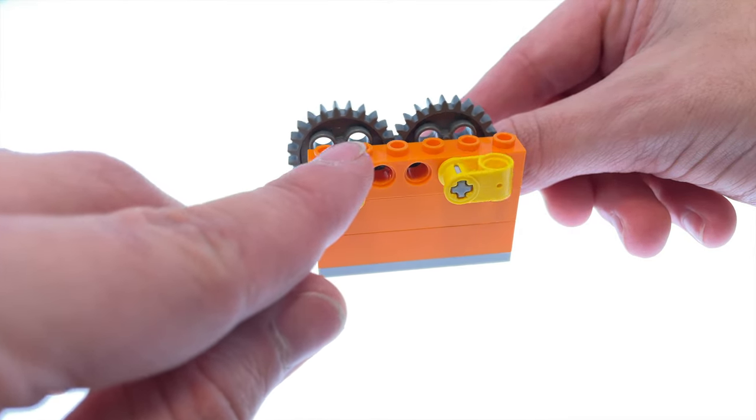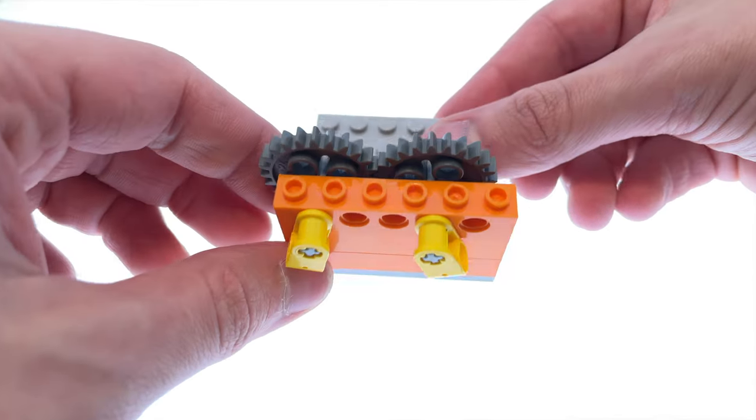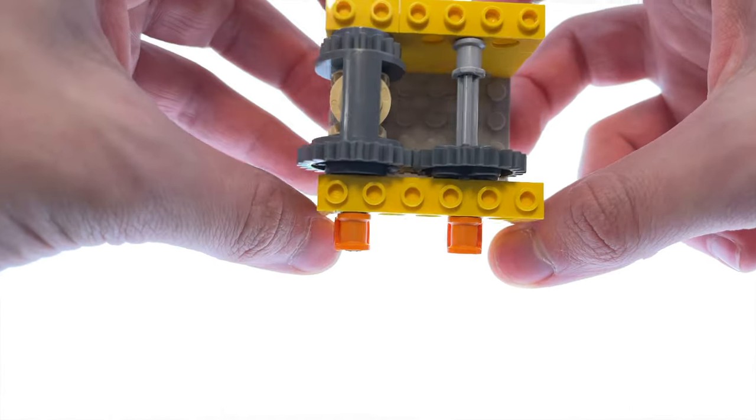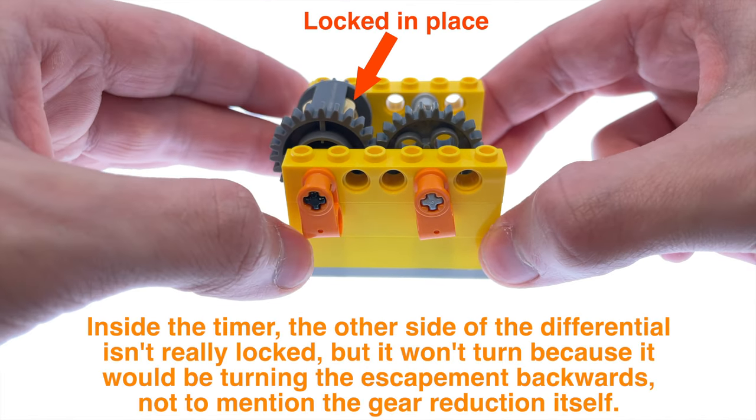But now look what happens if you replace the first gear with the twenty-four tooth side of a differential. Note that the gear in the back is locked and can't turn just like it is in the timer.